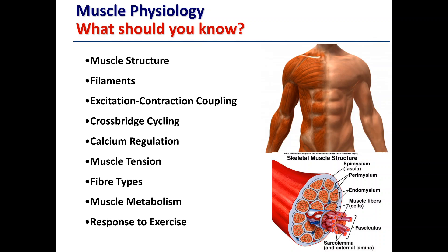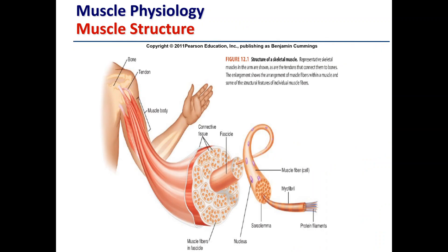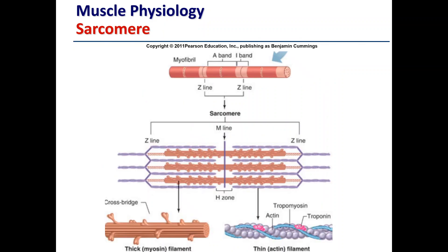We'll get started on the first piece: muscle structure. The muscle is bound within a large piece of connective tissue known as the fascia, and within that there are a number of fascicles, which are effectively bundles of muscle fibers stretching along the length of the muscle. Within these muscle fibers we have a series of myofibrils, and within these myofibrils we have protein filaments involved in muscle contraction — organized into units termed sarcomeres.